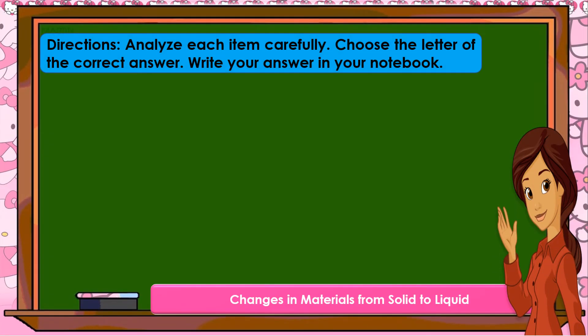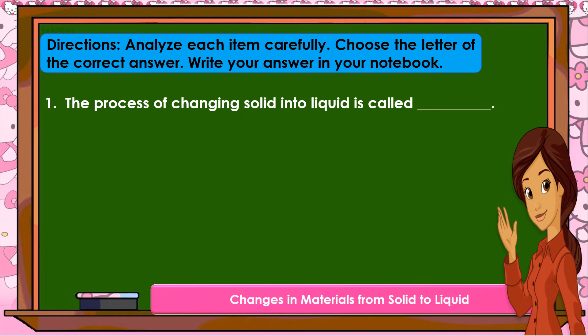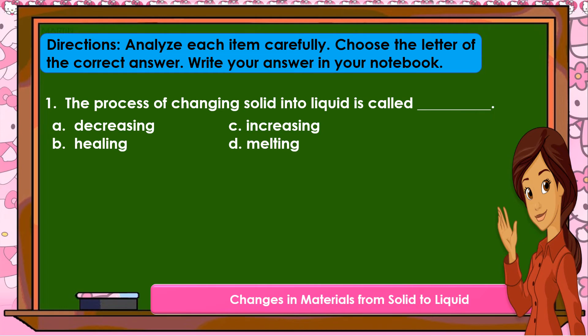Now, let us analyze each item carefully. Choose the letter of the correct answer and write your answer in your notebook. Number 1: The process of changing solid into liquid is called — A. Decreasing. B. Heating. C. Increasing. D. Melting.